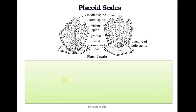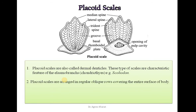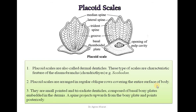Let's begin with Placoid Scales. Placoid Scales are also called Dermal Denticles. This type of scale is a characteristic feature of elasmobranchs, i.e., chondrichthyes species — for example, Scoliodon. Placoid Scales are arranged in irregular oblique rows covering the entire surface of the body. They are small, pointed and tri-radiated denticles composed of basal bony plates embedded in the dermis.